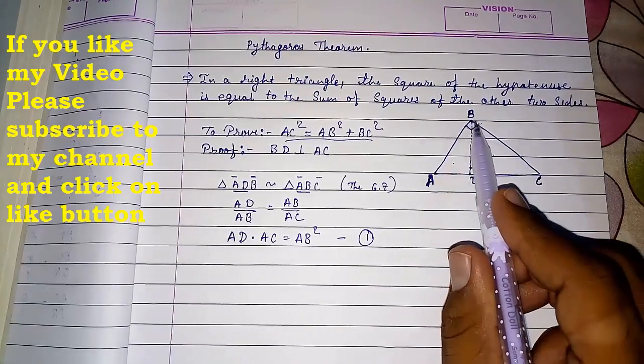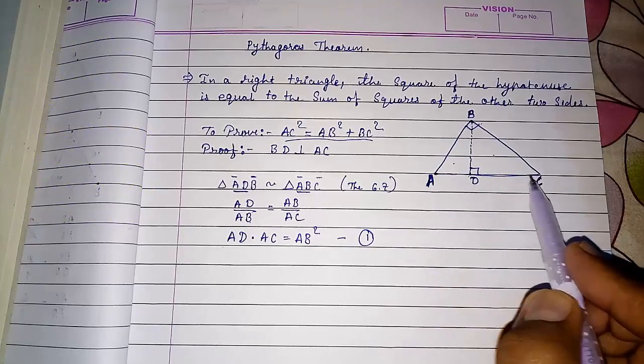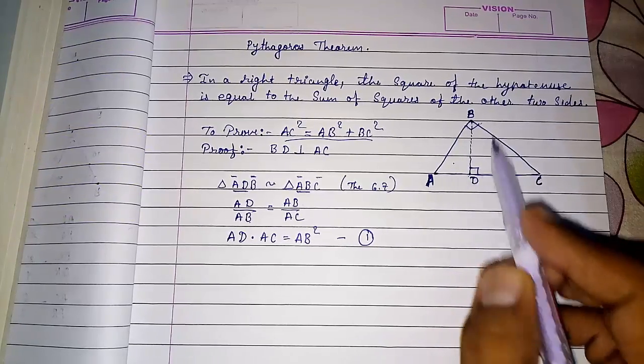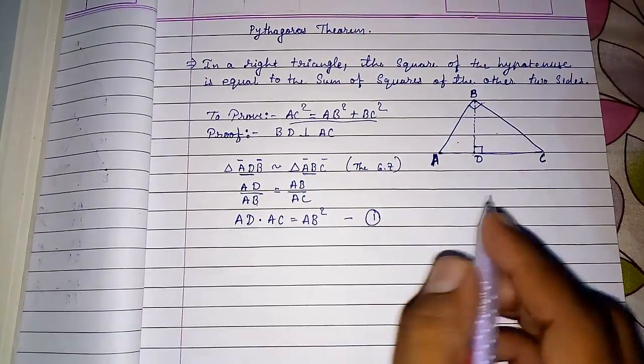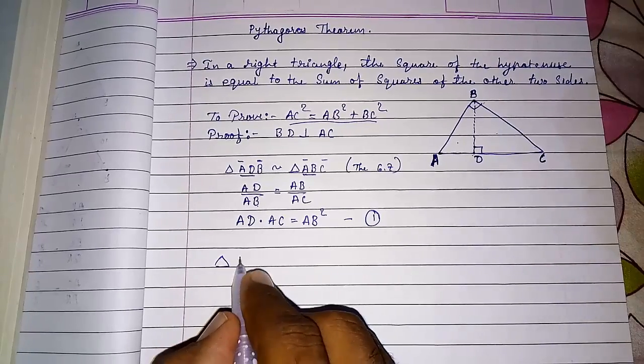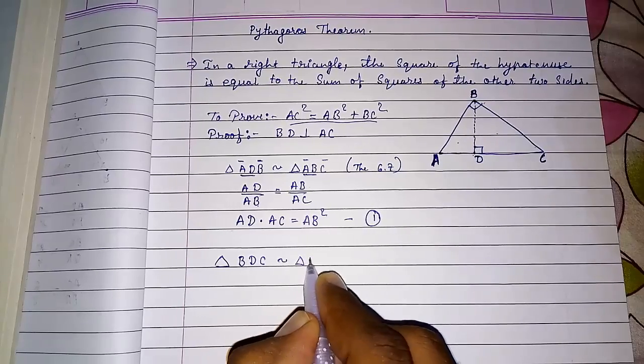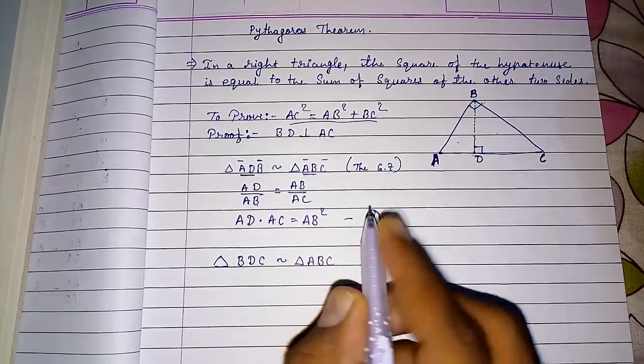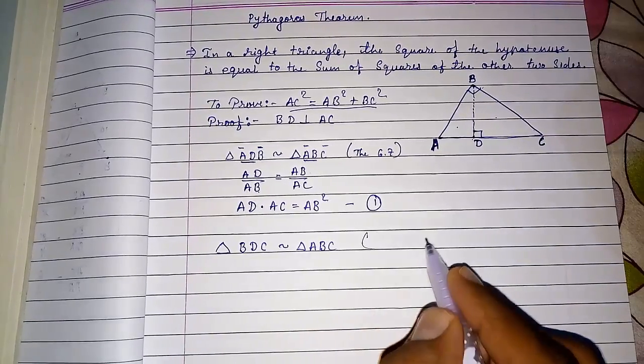Now you have to make this triangle BDC and ABC similar. Again, C is common in both triangles, and this 90 degrees, this 90 degrees. So by angle-angle similarity or theorem 6.7 you can say triangle BDC is similar to triangle ABC, by theorem 6.7 or by angle-angle similarity, whatever you want to use.